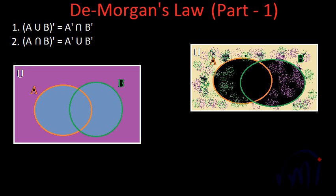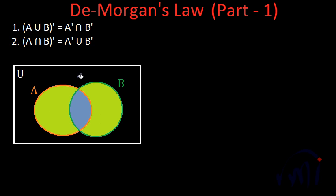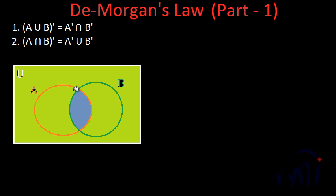This is the proof using a Venn diagram of the first law. In a similar way we can find the proof of the second law. Here we have our original drawing with one universal set and two sets A and B. For the second law we need to find the complement of A intersection B. A intersection B is this overlapping area, and the complement of A intersection B is the whole area of the universal set that does not belong to A intersection B — the area represented in light green.